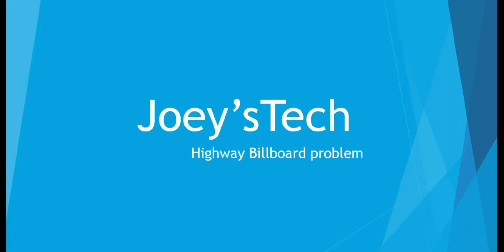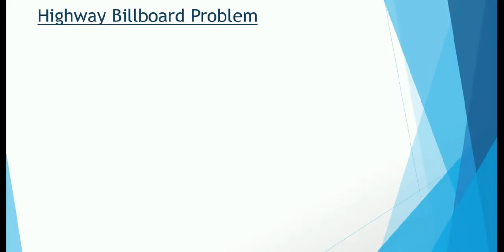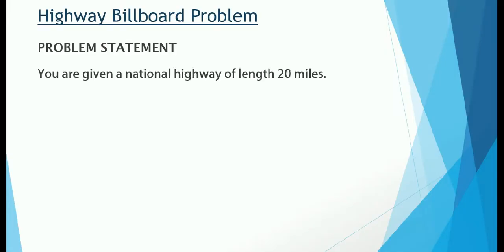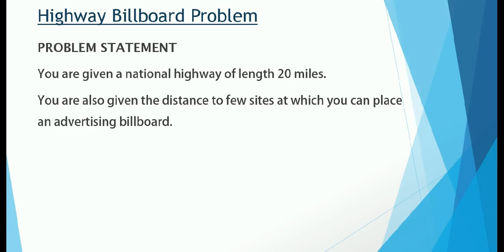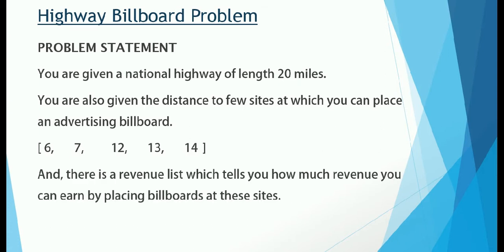Now let's see what the problem statement of the highway billboard problem says. You are given a national highway of length 20 miles. You are also given the distances from the point of origin to a few sites at which you can place an advertising billboard. Those sites are placed at distances of 6 miles, 7 miles, 12 miles, 13 miles, and 14 miles. You are also given a revenue list which tells you how much revenue you can generate by placing billboards at these sites.